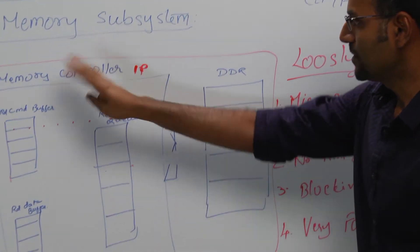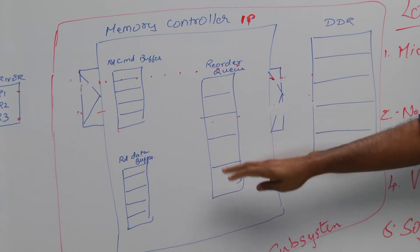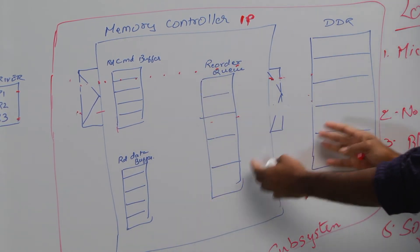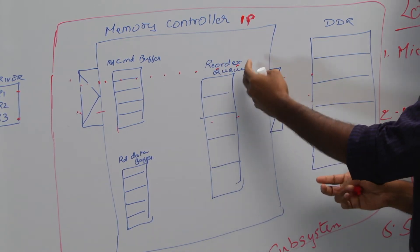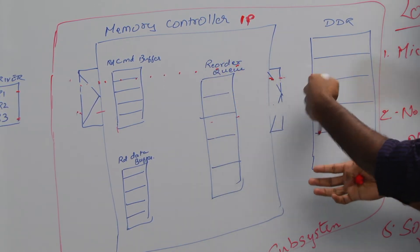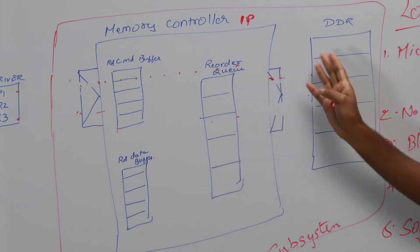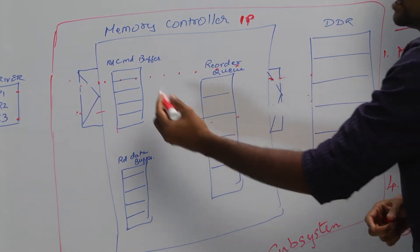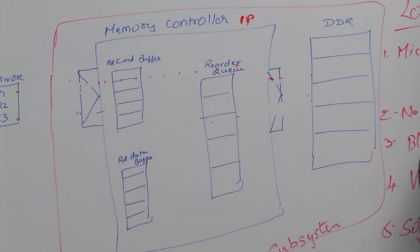So again, just a quick recap. This is our memory subsystem that we have been taking as an example for this review. We have a memory controller IP sitting here and the memory itself. We've seen what this queue does - basically it's where the commands get reordered for better memory utilization to improve channel utilization. There is also this read command buffer and then there is data buffer on the back channel.